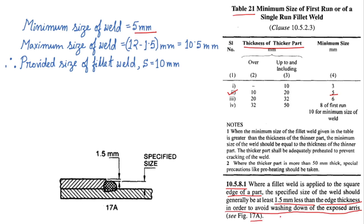So in order to avoid washing down of the exposed areas, Figure 17A, the maximum size of the weld should be the thickness of the plate minus 1.5 mm. So 12 minus 1.5 mm is the maximum size of the weld, which is 10.5 mm. Therefore, I have provided the size of the fillet weld as 10 mm, in between 5 and 10.5.